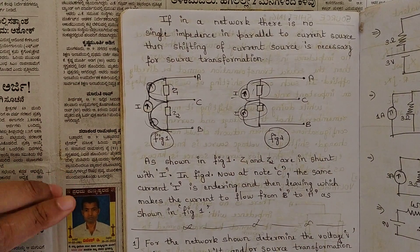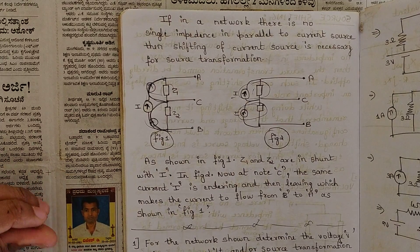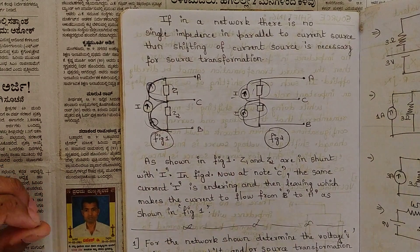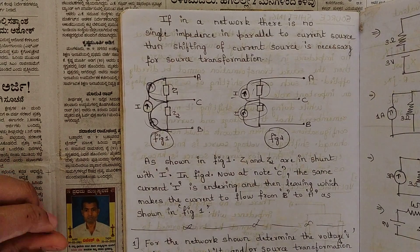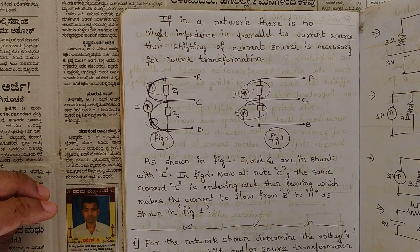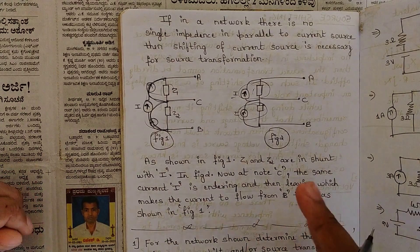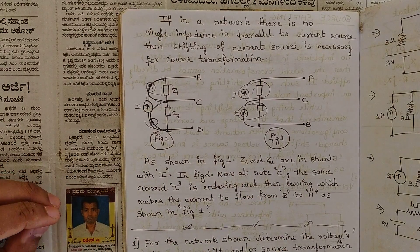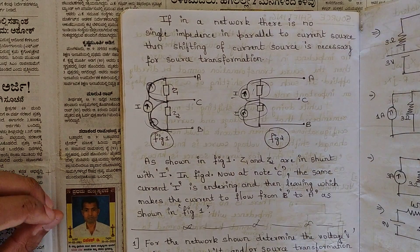So now we have two important problems. Let us see them and try to solve them. In this case we should be using both source shifting as well as source transformation. These kinds of questions are asked in exams — they won't ask only source transformation. They would give you a complex circuit and ask you to reduce the network using both source shifting as well as source transformation.